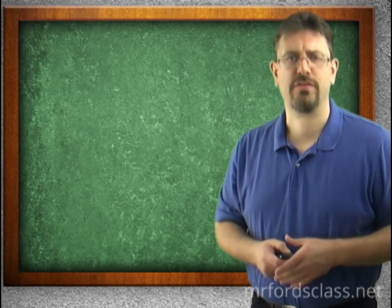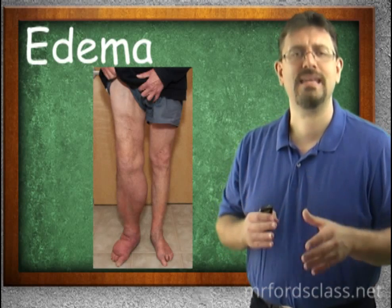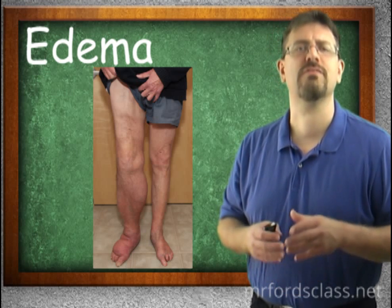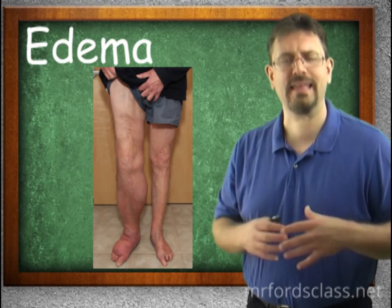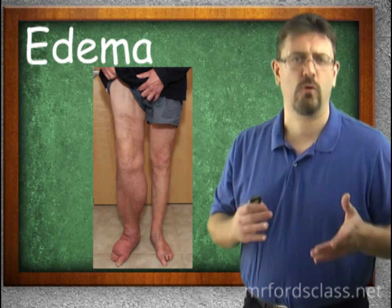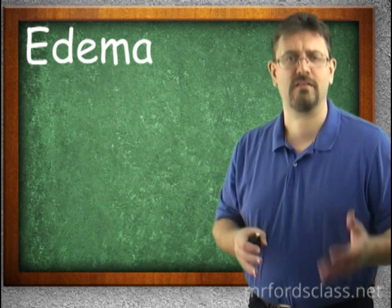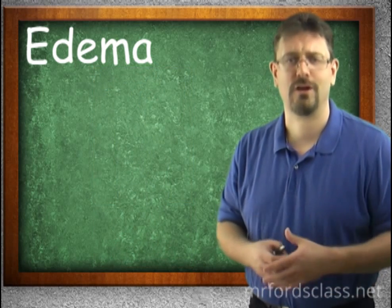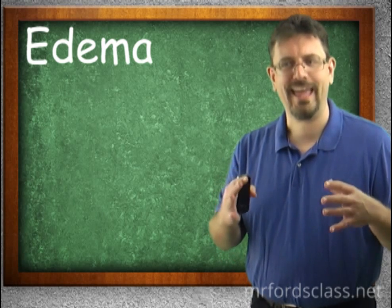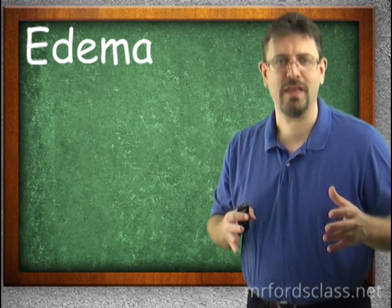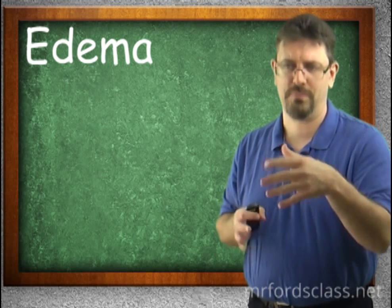There is one other thing I want to talk about before we move on, and that is edema. Edema is what happens when the lymphatic system fails — fluid builds up in the surrounding tissue. For the most part, we find this in the legs. An example I use in my face-to-face class is my wife during our first pregnancy, when her legs were really swollen. She had something called pitting edema, where you could push in and it would leave an indentation — a pit.